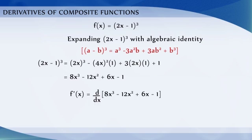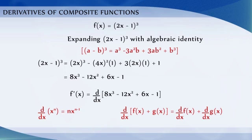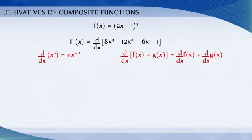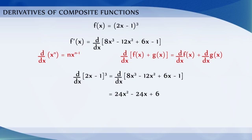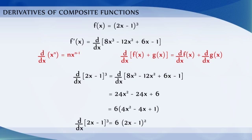We can find the derivative of this polynomial using the derivative of the standard function x^n and the algebra of derivatives: the differentiation of f(x) + g(x) equals the differentiation of f(x) plus the differentiation of g(x). So the derivative of (2x − 1)^3 equals the derivative of 8x^3 − 12x^2 + 6x − 1, which equals 24x^2 − 24x + 6. This can also be written as 6(2x − 1)^2.